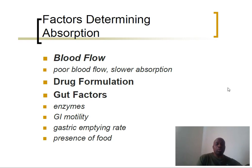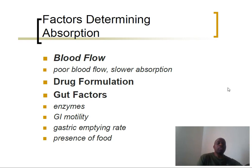Now let's look at other factors that determine drug absorption. The first is blood flow — the rate at which blood flows will influence drug absorption. For example, poor blood flow may result in lower absorption. A person who is walking or exercising will have their blood flow affected. The second is drug formulation — the type of drug formulation will influence drug absorption. It is known that liquid drugs are more easily absorbed via the GI than solid drugs.